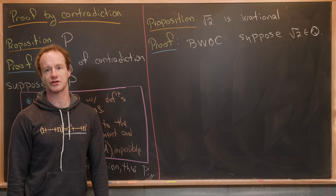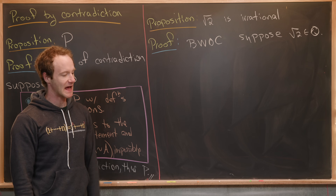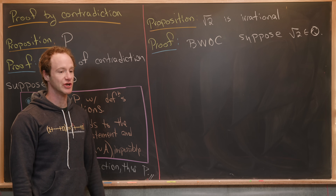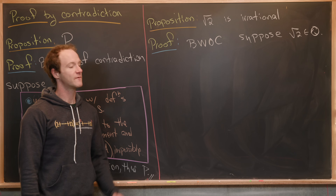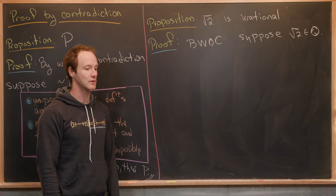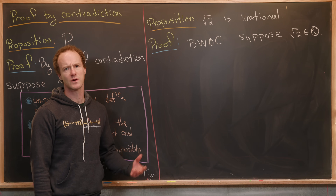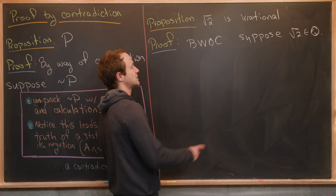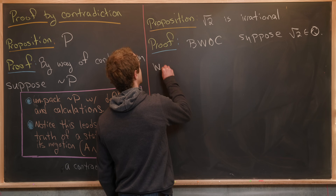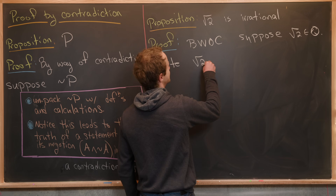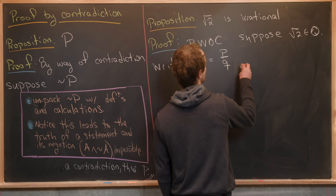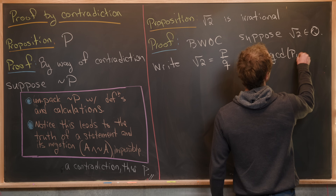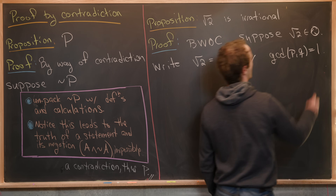By way of contradiction, suppose that the square root of two is rational — in other words, it's an element of the rationals. If it's an element of the rationals, we can write it as a ratio of two integers. Furthermore, those integers can be chosen to be relatively prime, meaning they share no common factors except one. So let's write the square root of two as p over q, with the GCD of p and q equal to one.